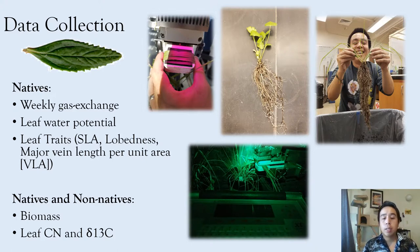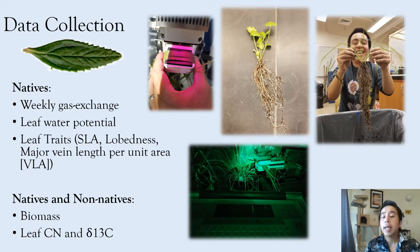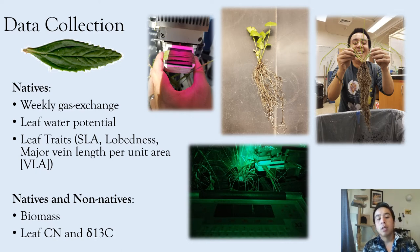For data collection, we measured leaf gas exchange weekly at midday. We also measured gas potential one time at the end of the treatment during dark-time hours. We measured the leaf water potential of all plants at each key watering period, and we measured leaf traits — specific leaf area, leaf lobedness, and major vein length per unit area — both prior to treatments and at the end of the second drought period. We measured biomass for native species at the end of the drought period and took sacrificial replicates at the beginning to establish a baseline measurement. For non-natives, we also measured their above-ground biomass at the end of the treatments. For both natives and non-natives, we measured leaf carbon, nitrogen, and delta carbon-13.